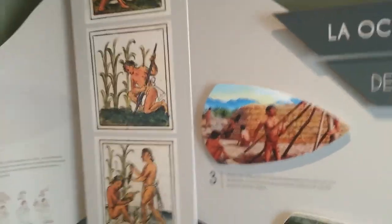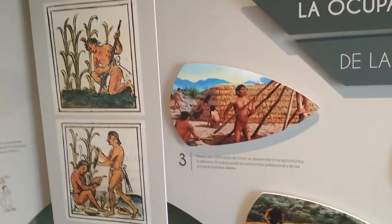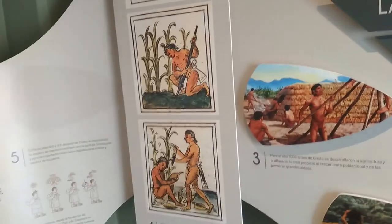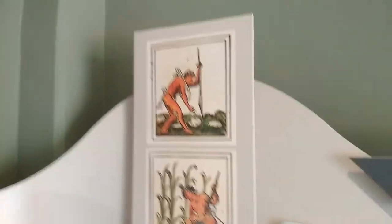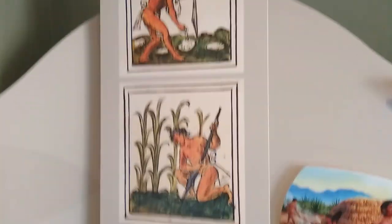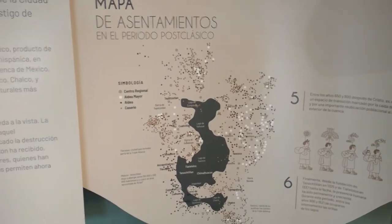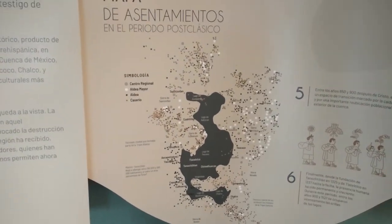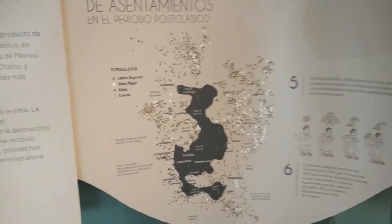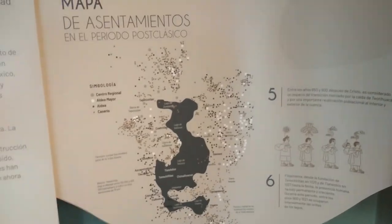Hace el año 1000 se desarrollaron la agricultura y la alfarería. Aquí vemos cómo con la coa se sembraban. Aquí vemos un mapa de los asentamientos del periodo posclásico. Vemos que hay muchos asentamientos, caseríos; hay menos aldeas. Aldeas mayores son menos y centros regionales también son menos.